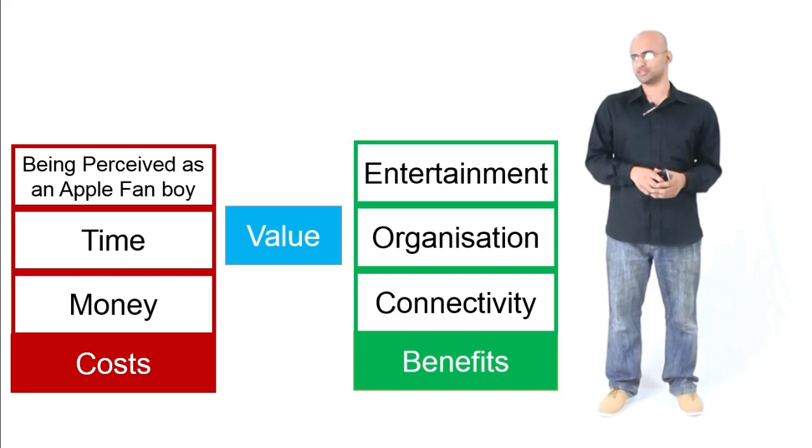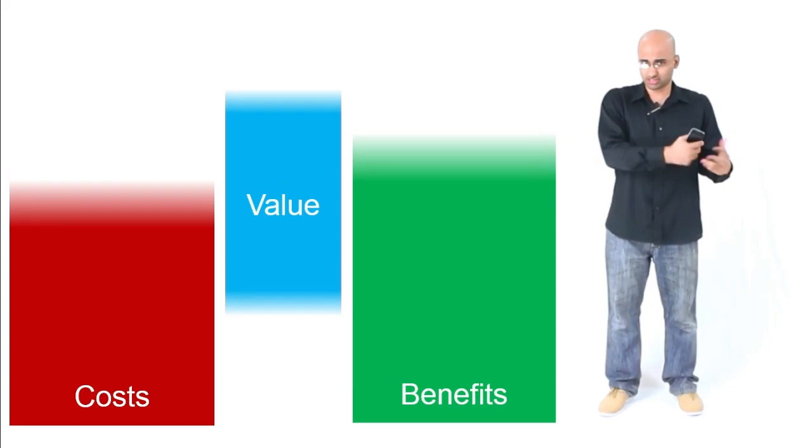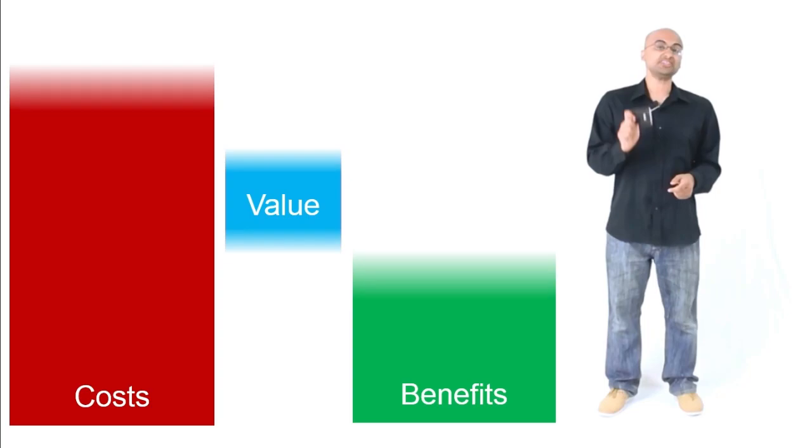Now what determines the value of something is the comparison between those two. The higher the benefit tower in relation to the cost tower, the more valuable something looks and vice versa. However, that's a very straightforward, simplified way of looking at this kind of dynamic.